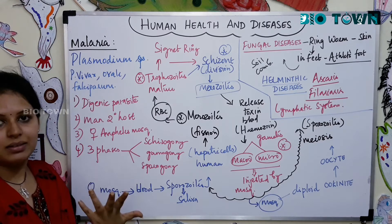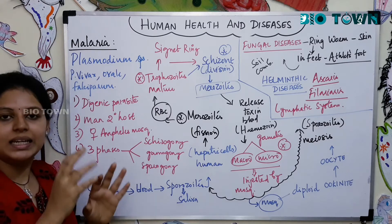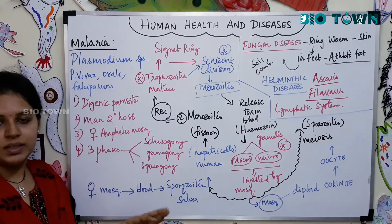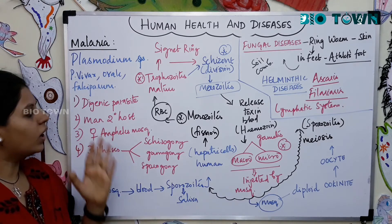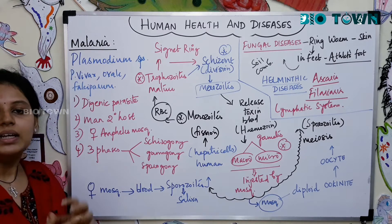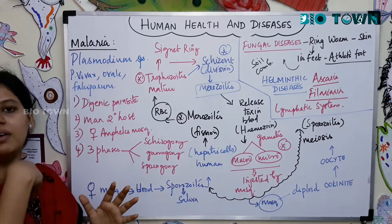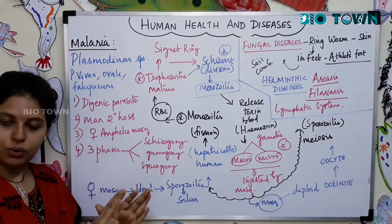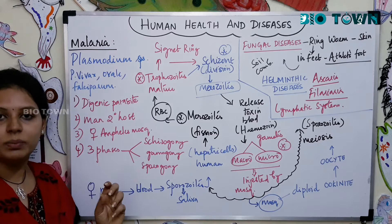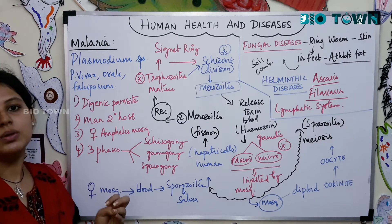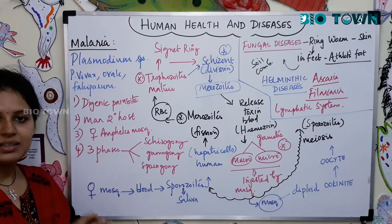Plasmodium is a digenic parasite, meaning this parasite spends half of its life cycle in the mosquito and the other half in humans. Humans are called the secondary host. The plasmodium releases spores in the mosquito, and these spores are transmitted to humans. So the primary host is the mosquito.